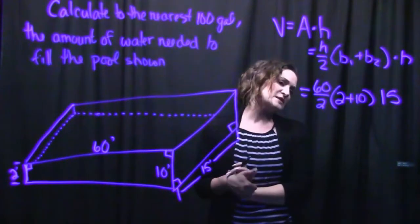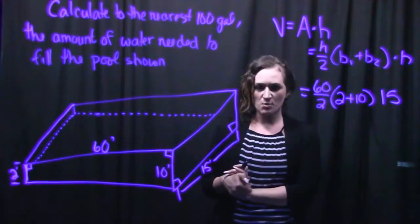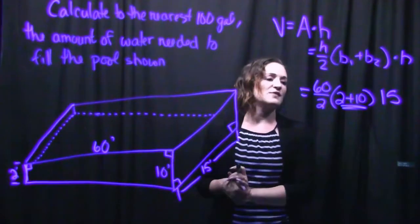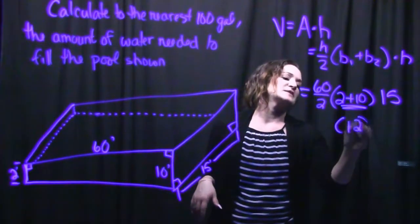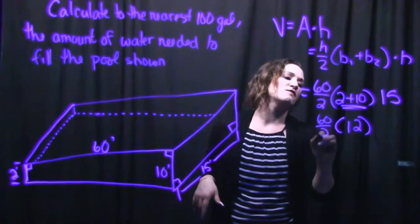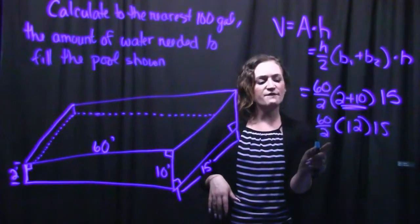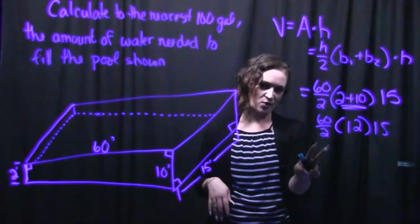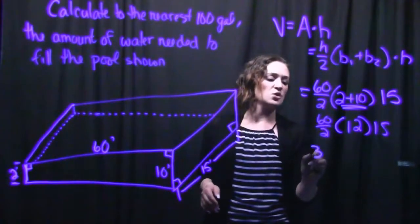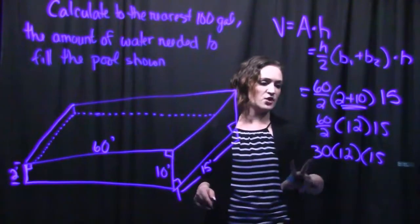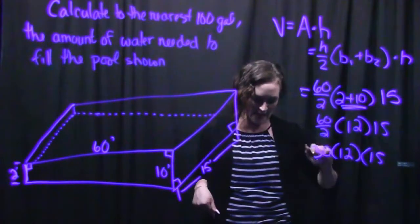So let's do a little bit of simplifying here. We do need to follow some order of operations when we break this down, starting with inside our parentheses. So 2 plus 10 gives us a 12 there. Drop everything else down. We can go ahead and divide out this fraction part that we have in front. 60 divided by 2 is going to give us 30. And then we're going to need to take this 30 times this 12 times this 15.